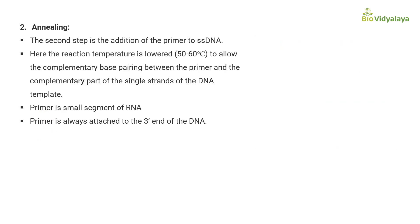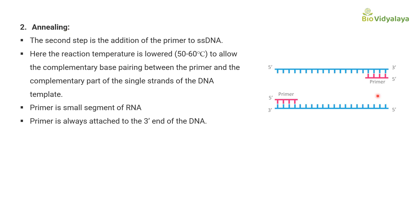The second step of PCR is annealing. In this step, a small segment of RNA called the primer is added. Here you can see the 3 prime end of the single-stranded DNA, and the RNA primer is attaching to this 3 prime end only.